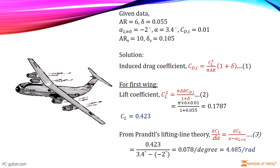We can write the lift coefficient CL squared equals pi times AR times CDI divided by 1 plus delta.